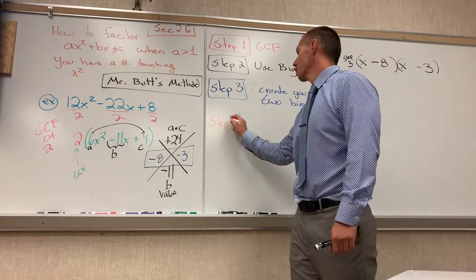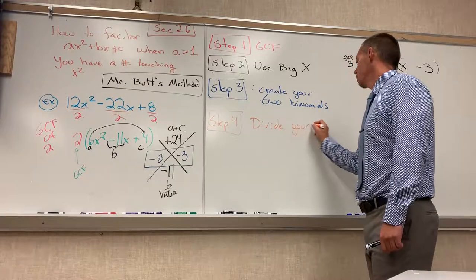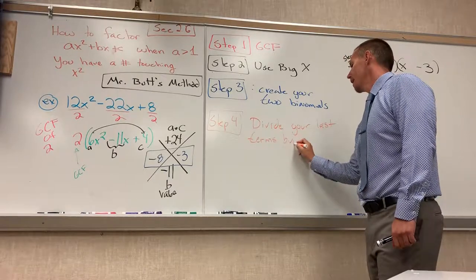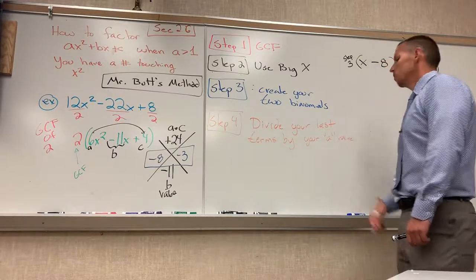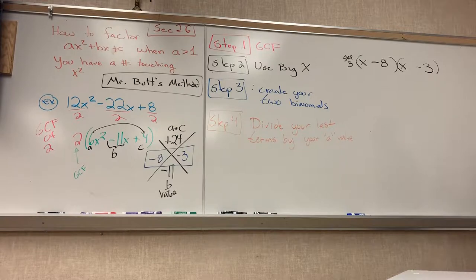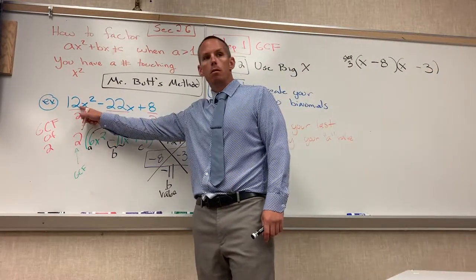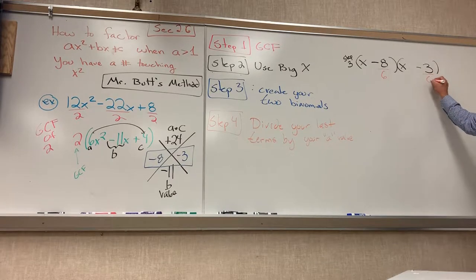So step number four, divide your last terms by your A value. So you got to divide by your A value. What is your A value? Six. I heard 12. What are we factoring? What's in blue or what's in green? Green. We're not factoring the blue. We're factoring the green. Notice that's why the A was written there, not up there. Divide by your A value, which is six.